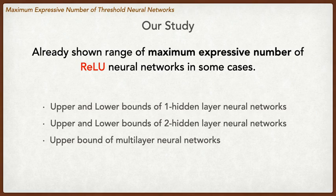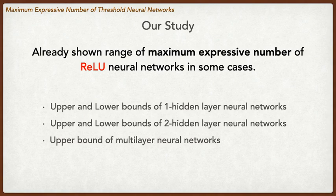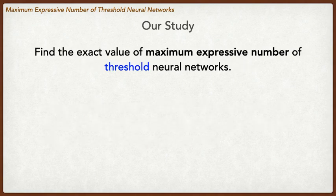We showed upper and lower bounds of single and two hidden layer networks, and an upper bound of multilayer networks. These results suggest the maximum expressive number of neural networks increases in proportion to the product of the number of hidden neurons. In this work, we show the exact value of the maximum expressive number of threshold neural networks.